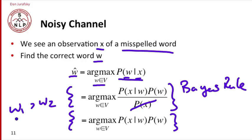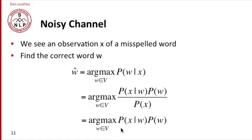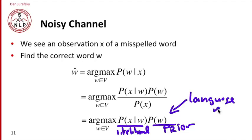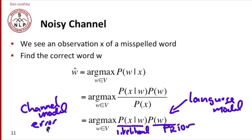That means the noisy channel model comes down to maximizing the product of two factors: the likelihood and the prior. We generally call this term the language model. That's the probability of the correct word w. And this likelihood term, we often call this the channel model, or sometimes the error model. So we've got two factors: the language model and the channel model.